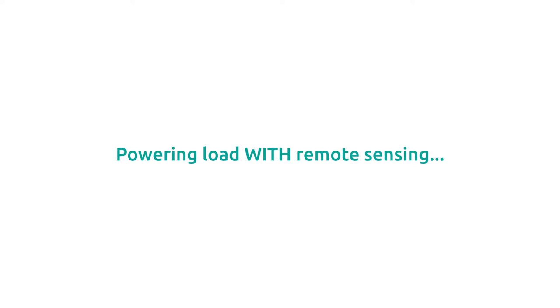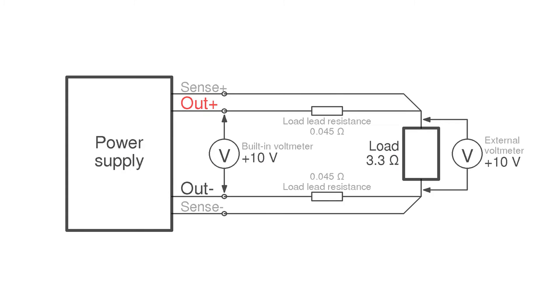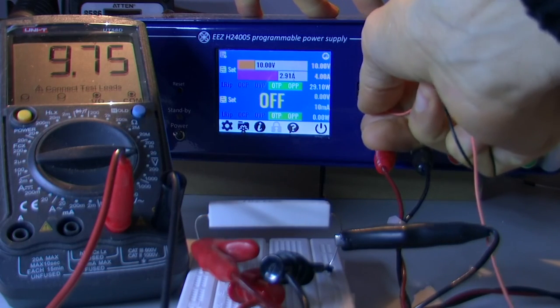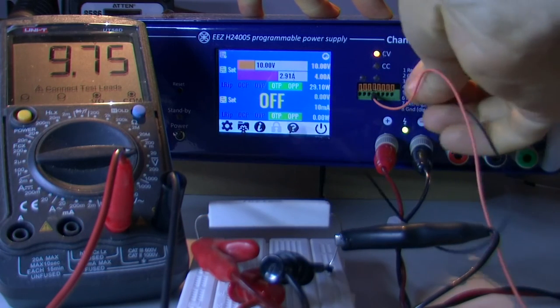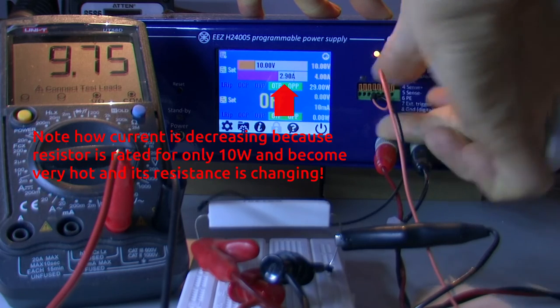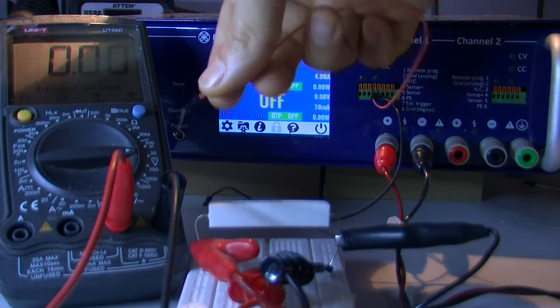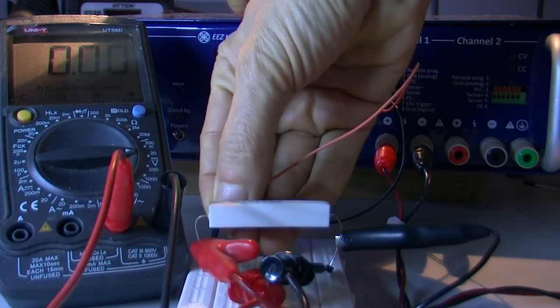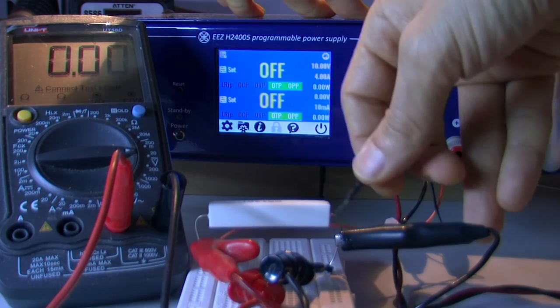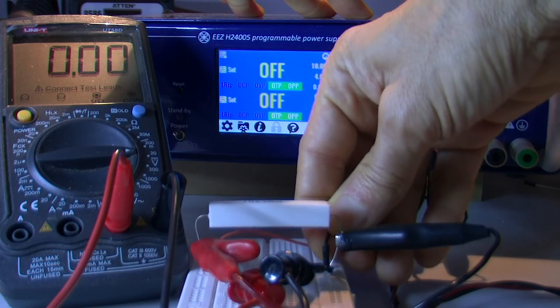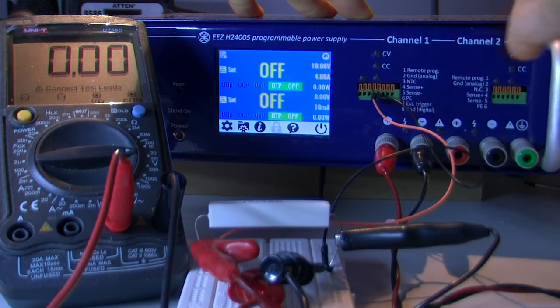Now we can continue, add additional wiring for remote sensing, and we will activate that remote sensing and see what will be the end result. We need to use inputs 4 and 5 in this case. Okay, I can disconnect for the moment.